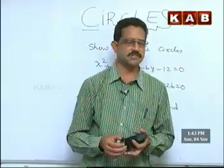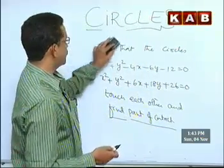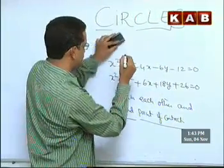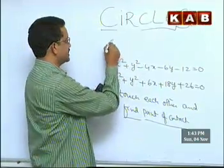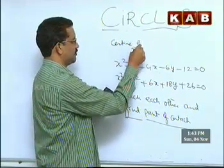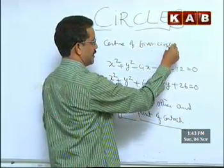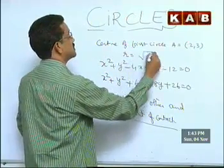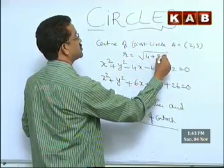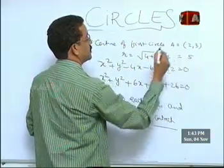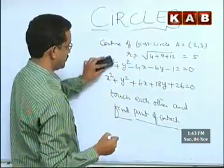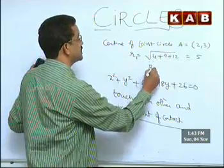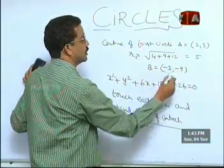What we have to find: the first circle's center. I call it capital A — the center of the first circle A = (2, 3) and the radius r1 = √(4 + 9 + 12) = 5. The first circle is complete.